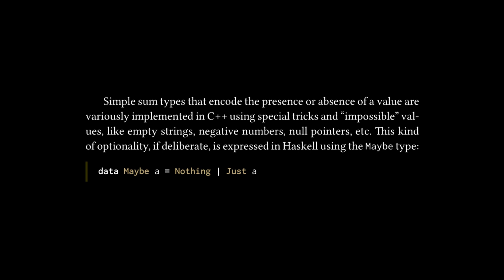The subsection later goes on to talk about an example of a sum type where the text reads simple sum types that encode the presence or absence of a value are variously implemented in C++ using special tricks and impossible values like empty strings, negative numbers, null pointers, etc. This kind of optionality, if deliberate, is expressed in Haskell using the Maybe type, which is defined very similarly to either, except instead of having left a right b, we have nothing pipe just a. So nothing represents when you don't have a value and then just is representing when you do have a value of the generic type a. And this is actually known as a number of different things in other programming languages, which you might have seen by the thumbnail of this video.